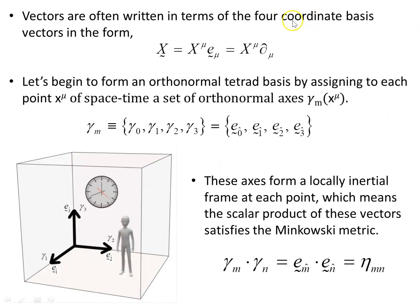Vectors are often written in terms of the four coordinate basis vectors: a vector X is x^mu e_mu, where e_mu are the coordinate basis vectors. Let's begin to form an orthonormal tetrad basis by assigning to each point x^mu of spacetime a set of orthonormal axes gamma_m at each point — four of them: one timelike and three spatial directions. These form an orthonormal basis.